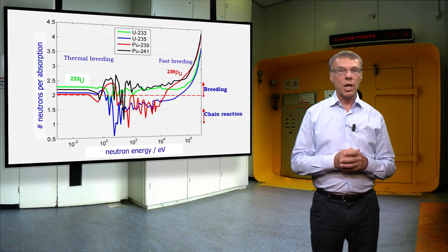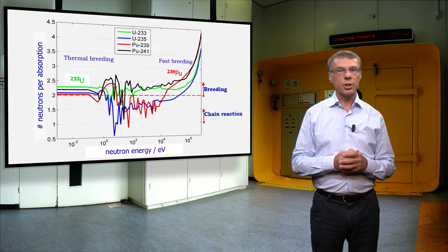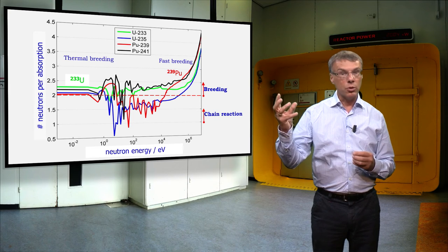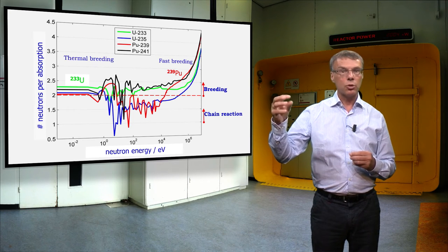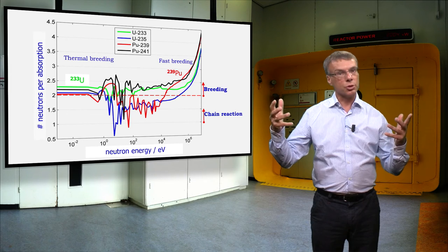This figure gives the number of neutrons per absorption in a fuel nuclide. It includes the effect that some neutron absorptions do not lead to fission, but to neutron capture.